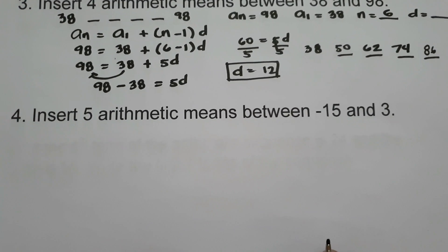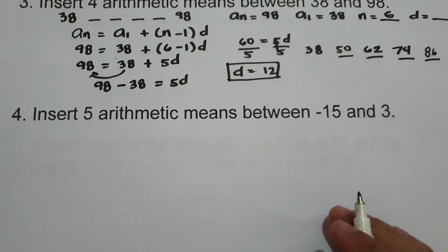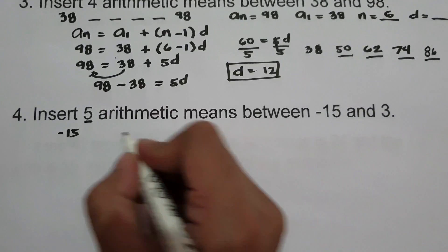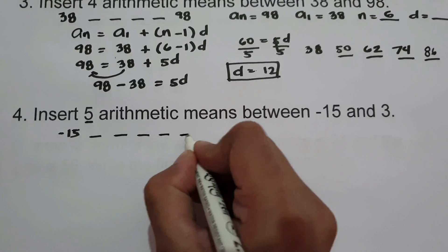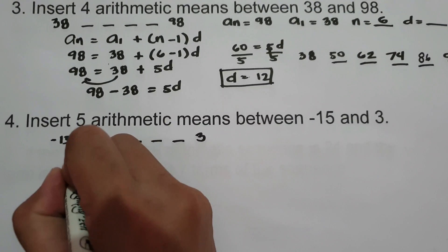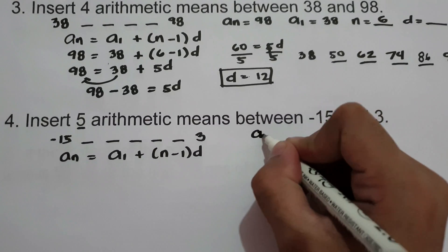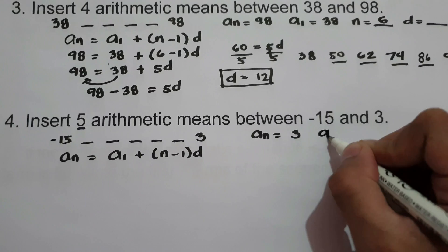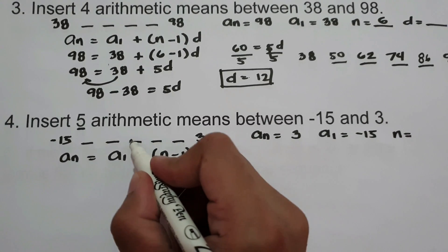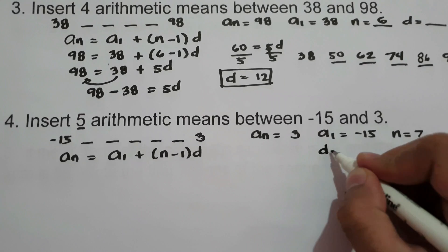What about number 4? How do we find the 5 arithmetic means between negative 15 and 3? We have negative 15, five blank terms, and then 3. We will use the formula: a sub n equals a sub 1 plus n minus 1 times d. A sub n is 3, a sub 1 is negative 15, and n is 7 because we have 7 terms total. We are looking for the common difference.